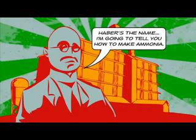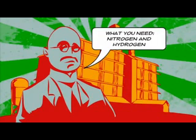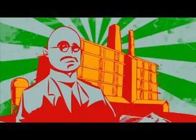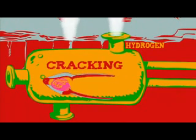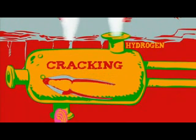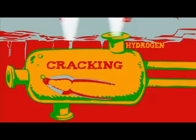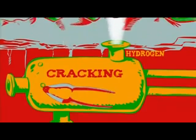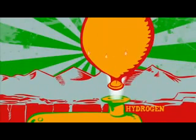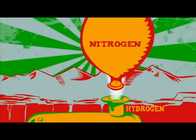Ammonia is made by something called the Haber process. The raw materials for the Haber process are nitrogen and hydrogen. Hydrogen comes from reacting natural gas with steam, or from cracking the long hydrocarbon molecules in crude oil. As for nitrogen — well, there's a lot of it about. Air is 80% nitrogen, and most of the rest is oxygen. Burning hydrogen in air uses up oxygen and makes water, H₂O. Take that away, and that leaves just the nitrogen.